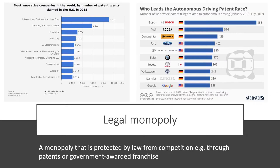L stands for legal monopoly. A legal monopoly is a business that is protected by law from competition. It could be that they have patent protection, or that they've been given a government-awarded franchise. I've chosen the most innovative companies in the world based on how many patents were granted and claimed in the United States in 2018. IBM, Samsung, Intel and Apple — big, sizeable, massive multinational companies claiming lots of patents.